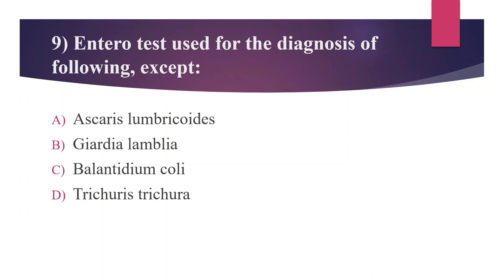Ninth question: The Entero test is used for the diagnosis of all the following except — Option A: Ascaris lumbricoides, Option B: Giardia lamblia, Option C: Balantidium coli, Option D: Trichuris trichiura. The answer is Option C, Balantidium coli. The Entero test, also called the string test, is used to detect the presence of parasites in the upper part of the small intestine. Balantidium coli is found in the large intestine, so the test is not used for its diagnosis.